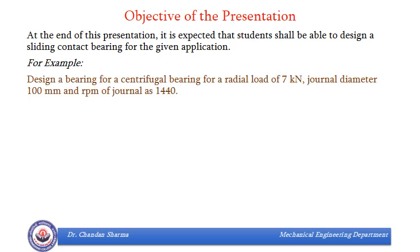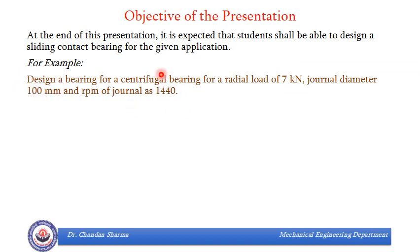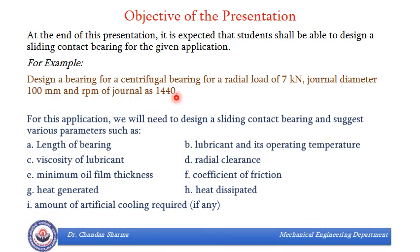For example, if we have been given a bearing for a centrifugal pump which needs to be designed for a radial load of 7 kN, a journal diameter of 100 mm, and RPM of journal as 1440. That means W is given to us, diameter D of journal is given to us, and RPM is given to us. By following the procedure laid down in the upcoming slides, we are supposed to find these parameters.